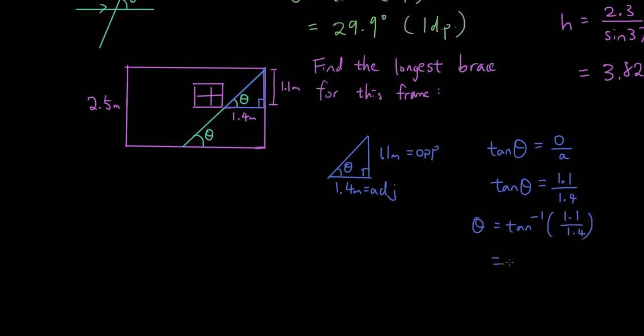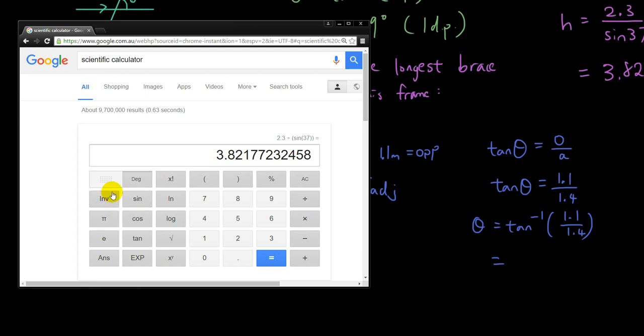So putting that in the calculator, make sure it says degrees on your calculator, and then you go inverse tan of 1.1 over 1.4. Arc tan means inverse tan. And then press equals and it says 38 degrees.